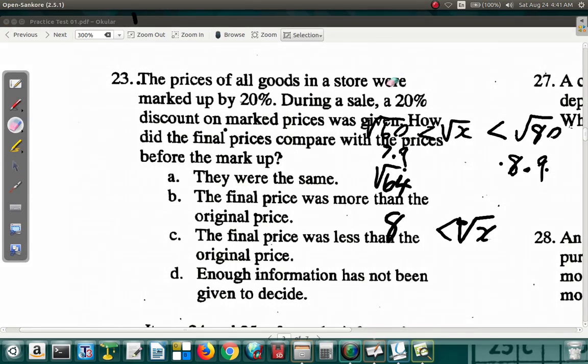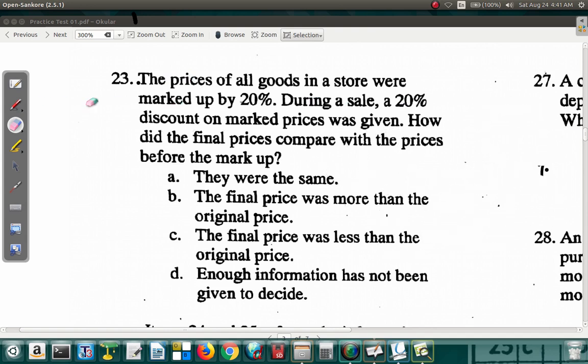23 says. The price of all goods in a store were marked up by 20%. So, you have an increase. They go up by 20%. During a sale, a 20% discount on the marked prices was given. So, then, that price went down by 20%. How did the final mark compare to the price before marked up? A. They were the same. B. The final price was more than the original price. C. The final price was less than the original price. D. Enough information was not given to decide. Alright, let's see.